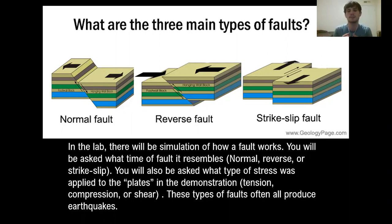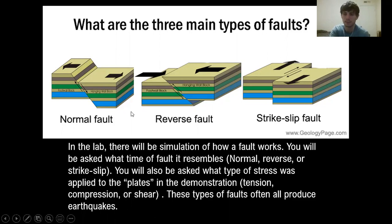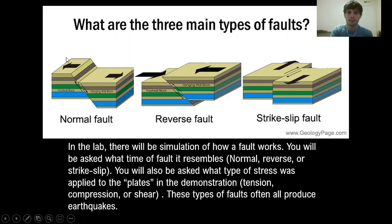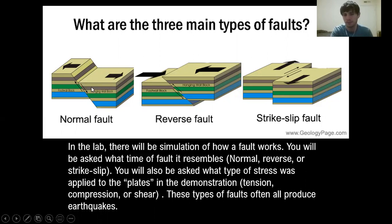The three different plate boundaries were divergent, convergent, and transform. The three different types of faults are the same in the way they have the same stresses. For example, a normal fault is found at a divergent plate boundary. You can remember that through the types of stresses — the plates diverge away from each other, so that's a normal fault.